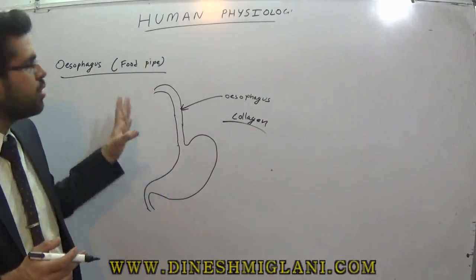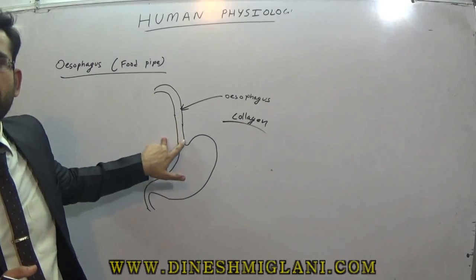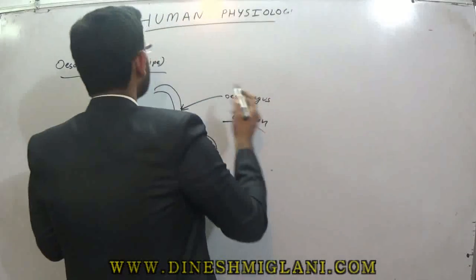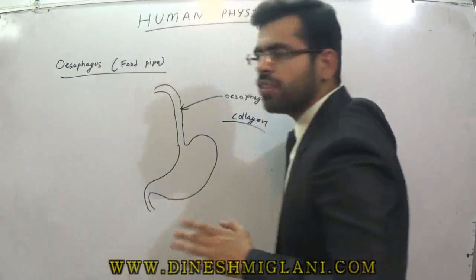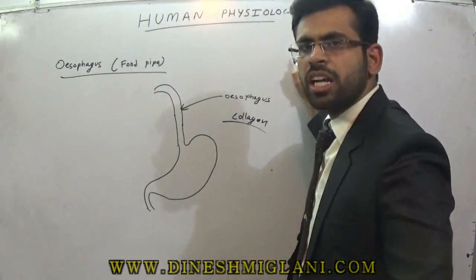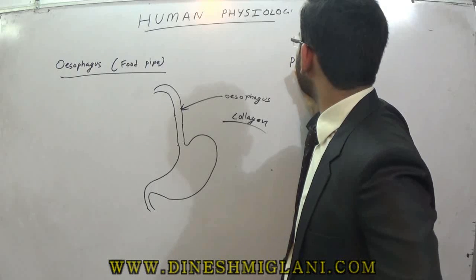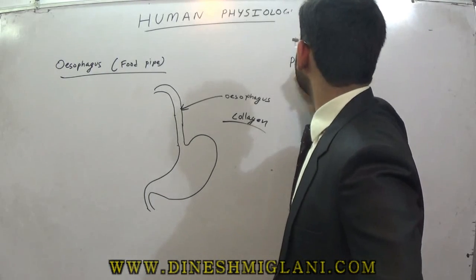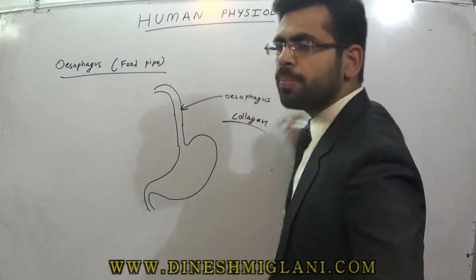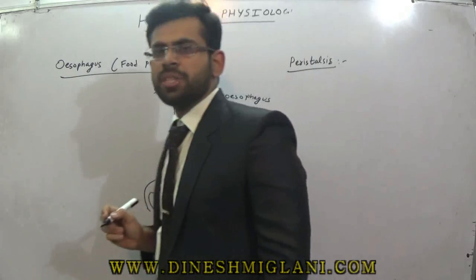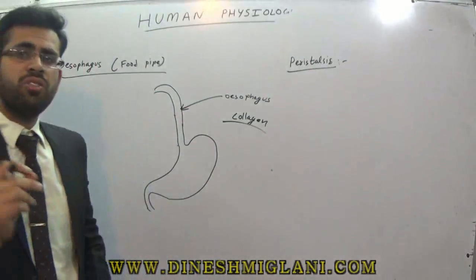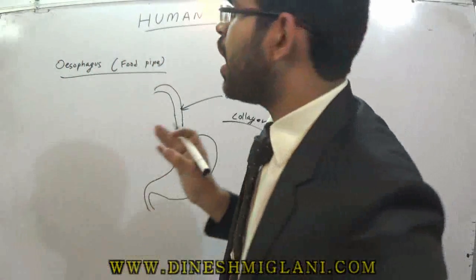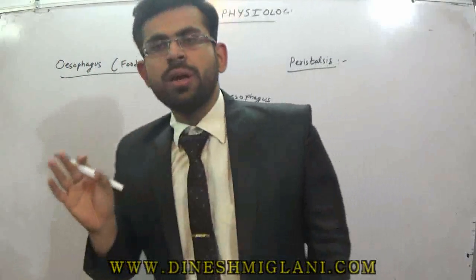Collagen is made of collagen fibers and they are completely cross-linked. Now, before we start to explain the esophagus, let's study one more term: peristalsis. What is this term? Peristalsis is a very important topic — it is very easy to understand and very important.